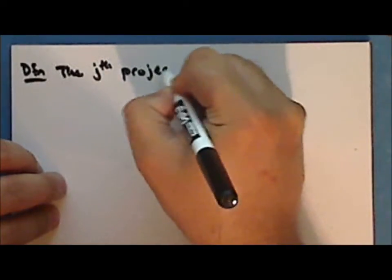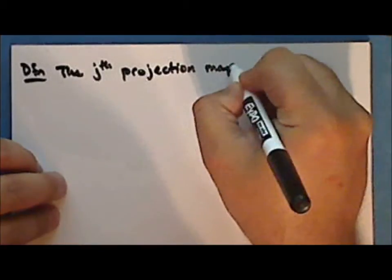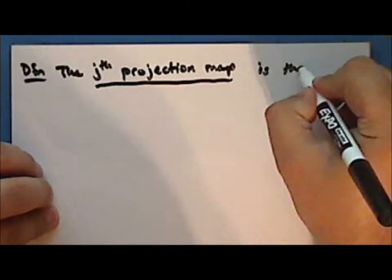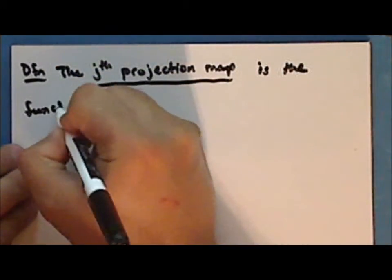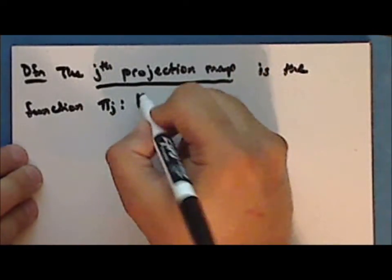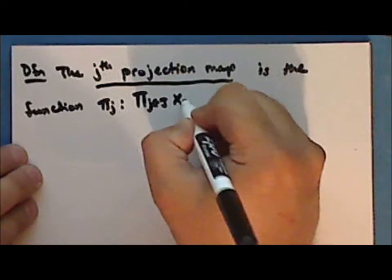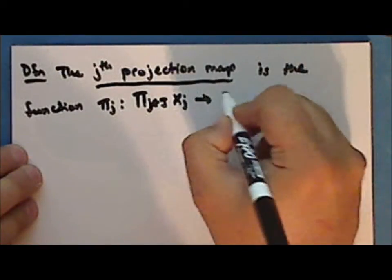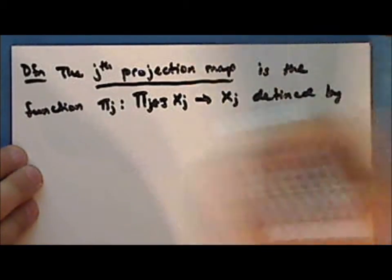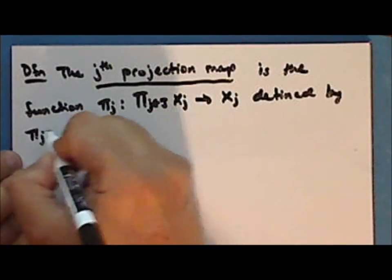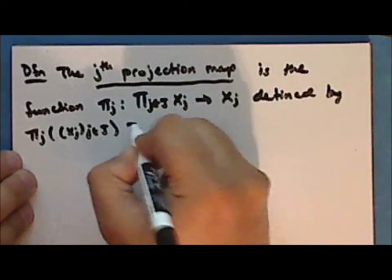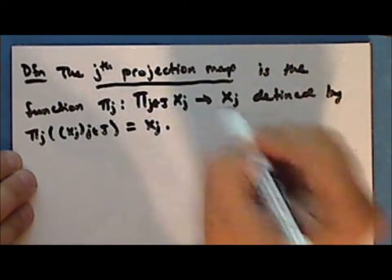The jth projection, which we denote pi sub j, from the arbitrary product set into the set x sub j, is defined by: pi sub j of the j-tuple x is the jth coordinate of the j-tuple.